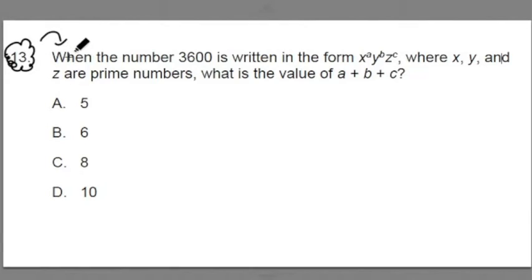It says here, when the number 3600 is written in the form x to the a power times y to the b power times z to the c power, where x, y, and z are prime numbers, what is the value of a plus b plus c?